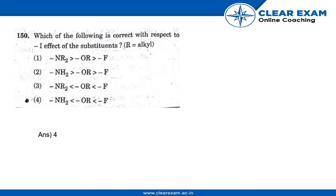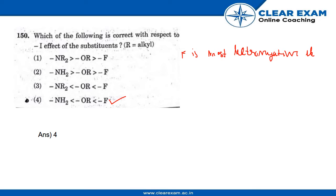The correct option is NH₂ < OR < F. This is because F is the most electronegative element, so it very strongly attracts the bond pair of electrons.